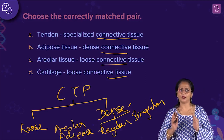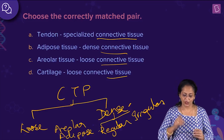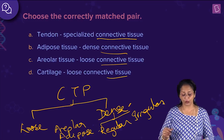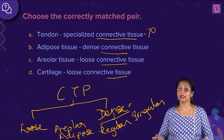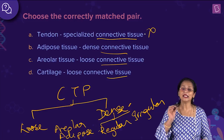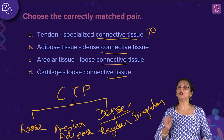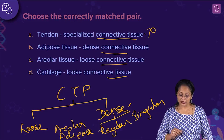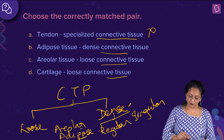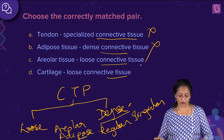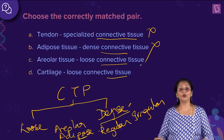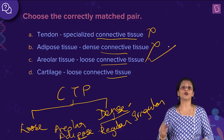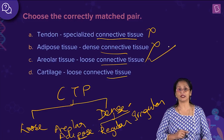Now let us look at the correctly matched pairs. Is tendon a specialized connective tissue? No — it is a dense regular connective tissue. Tendon connects the muscle to the bone. Is adipose connective tissue a dense connective tissue? No — adipose is a loose connective tissue. Is areola tissue a loose connective tissue? Yes — this is the right answer. Is cartilage a loose connective tissue? No — cartilage is a specialized connective tissue.